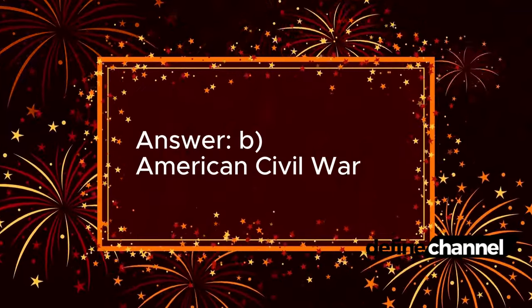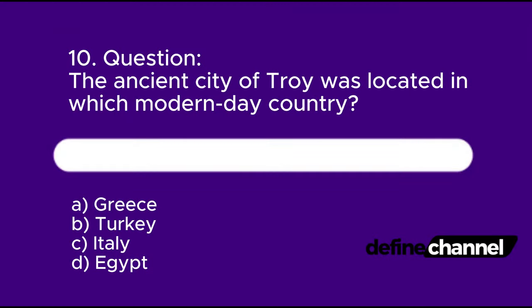Question 10: The ancient city of Troy was located in which modern-day country? A. Greece, B. Turkey, C. Italy, D. Egypt. Please determine which is the correct answer.